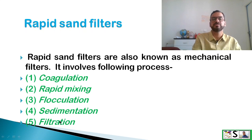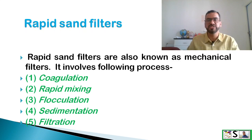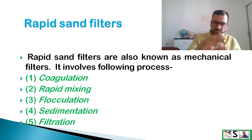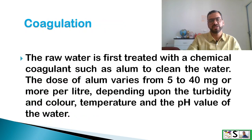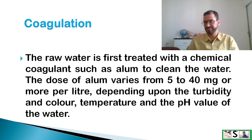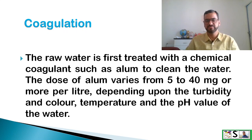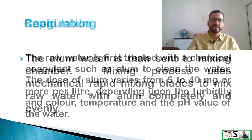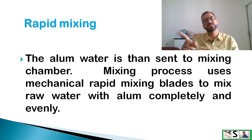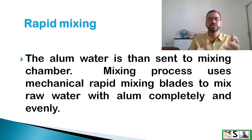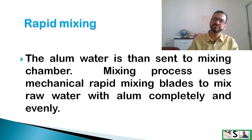After the sedimentation stage, the remaining process is the same as in slow sand filters. The raw water is first treated with a chemical coagulant such as alum. The dose of alum varies from 5 to 40 mg or more per liter depending on turbidity, color, temperature, and pH. The alum water is then sent to the mixing chamber where mechanical rapid mixing blades mix the raw water with alum completely and evenly so that alum can act for coagulation.